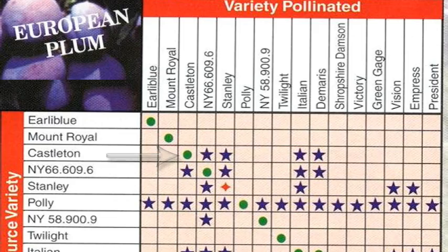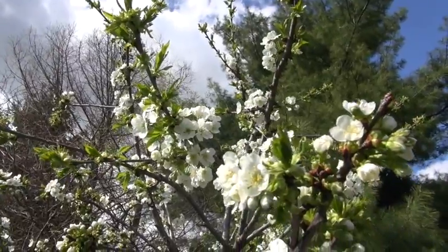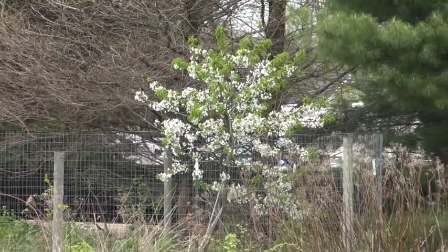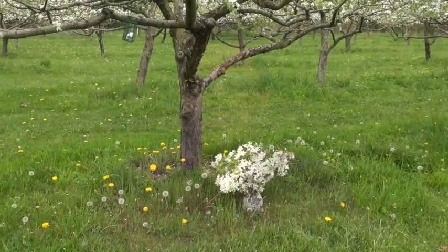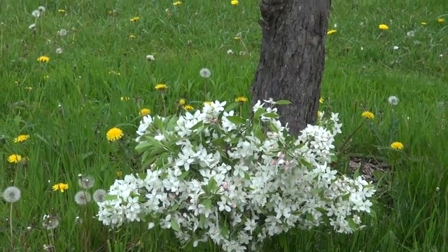Once the selection is made, the trees should be planted fairly close in proximity to each other — at most within a hundred feet. In most cases, within a city lot yard is just fine. If you don't have a pollinator and you're looking for a way to still get fruit, as a temporary measure for cross-pollination you can take a bouquet of flowers from a compatible variety and simply place it under the tree to encourage fruit production, because bees will go between the two sources.